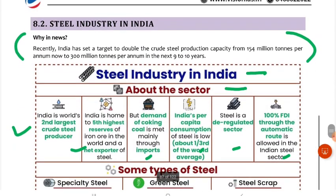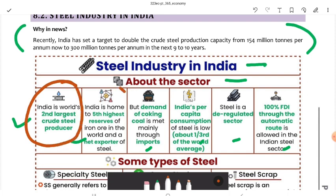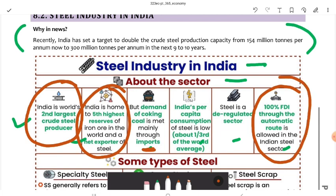Now let's talk about the steel industry in India. India has set a target to double crude steel production from 154 million tons to 300 million tons in the next 9 to 10 years. India is the second largest crude steel producer and has the fifth highest reserve of iron ore. However, demand for coking coal is mainly met through imports, which is not good. India's per capita consumption is also low. Steel is a deregulated sector, and 100% FDI is allowed.